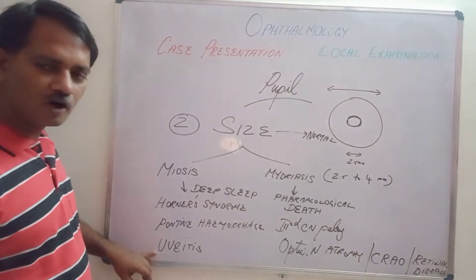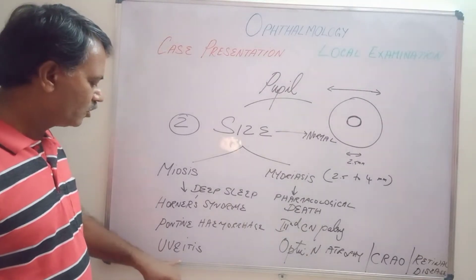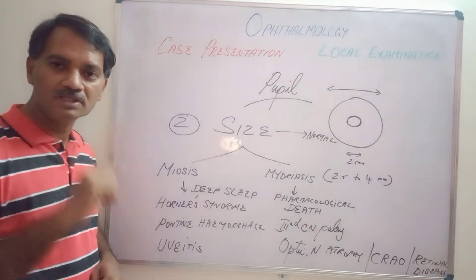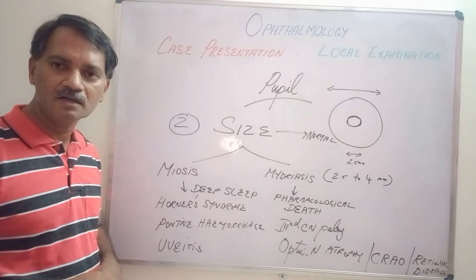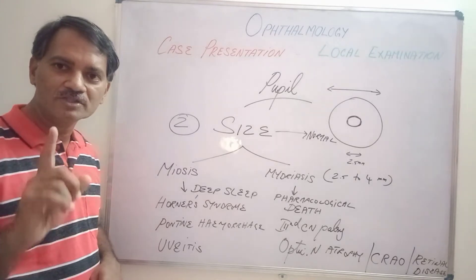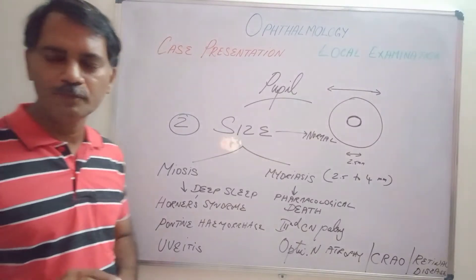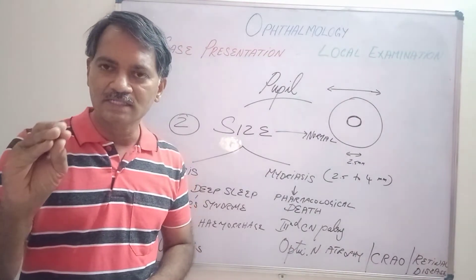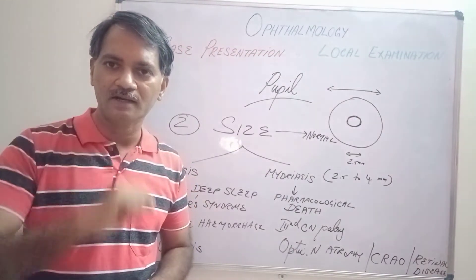Another common cause for miosis in eye pathology is uveitis or iridocyclitis. In iridocyclitis, the pupil will be small, constricted, and irregular.